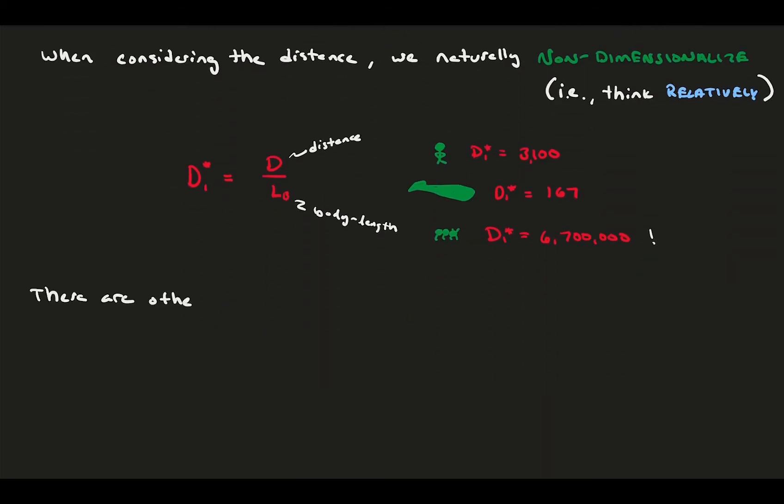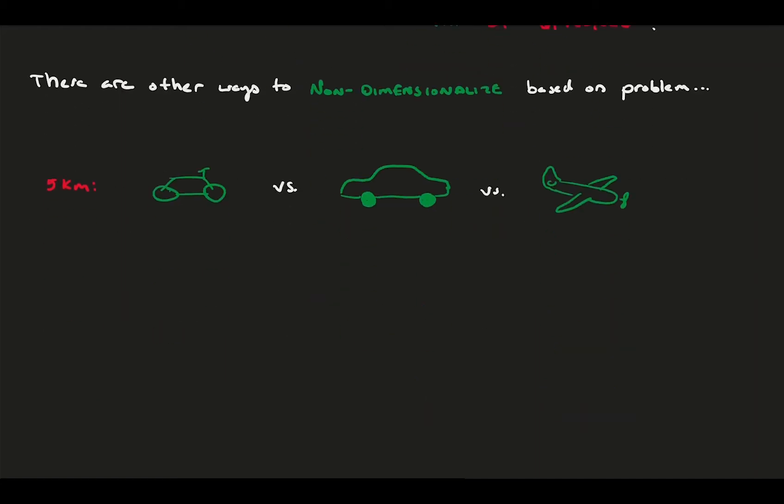For an average human, this is something like 3,100 body lengths, but only 167 whale body lengths. Conversely, an ant would have to cover its body length over 6 million times to go that distance. In this case, it seems like body length was the natural relevant parameter, and it nicely represents how difficult a 5K would be for each animal. However, depending on the problem specifics, there are other ways to non-dimensionalize. Take the same distance, but we are now considering it for a human on a bike, in a car, and on a small-sized aircraft.